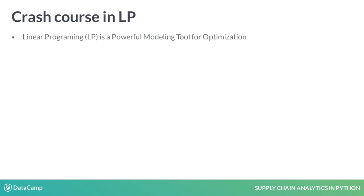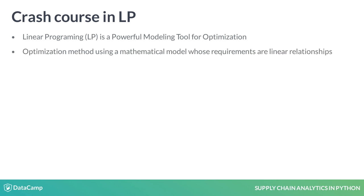Here is a crash course in linear programming, or LP. LP is a powerful tool for modeling decisions for optimization. It is an optimization method using a mathematical model whose requirements are represented by linear relationships. There are three basic components of LP modeling.